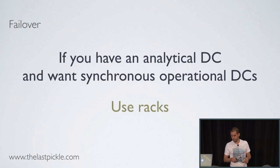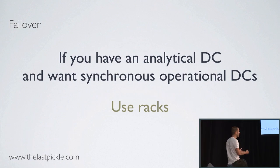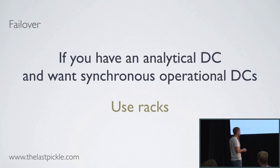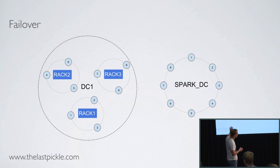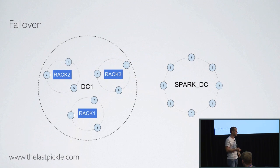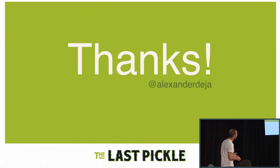One last thing: if you have an analytical DC but still want strongly consistent operational DCs, you can use racks instead of creating four separate DCs. You would create two DCs, with the operational one having at least three racks — you want to create as many racks as your replication factor.